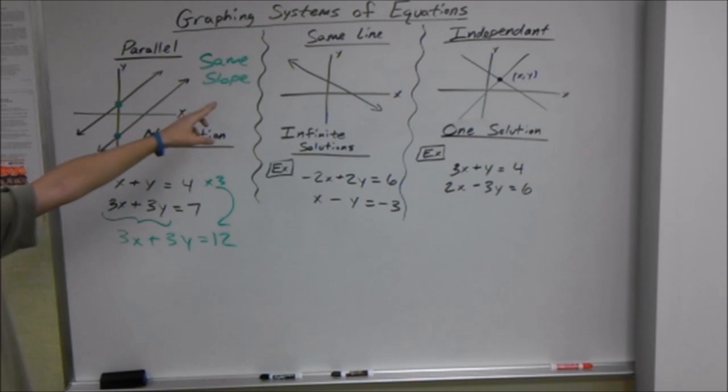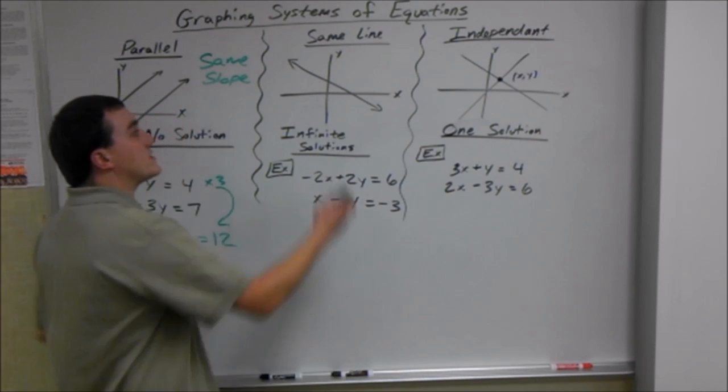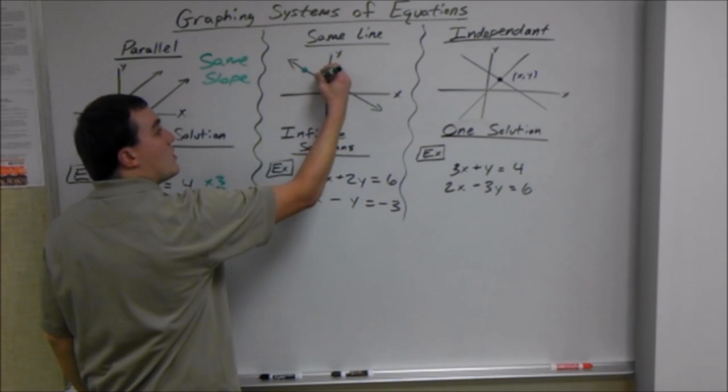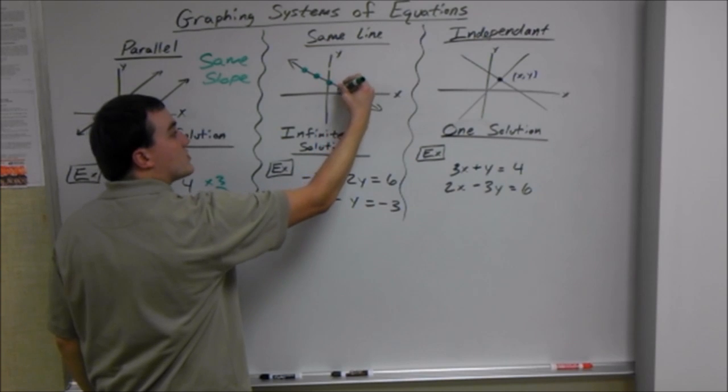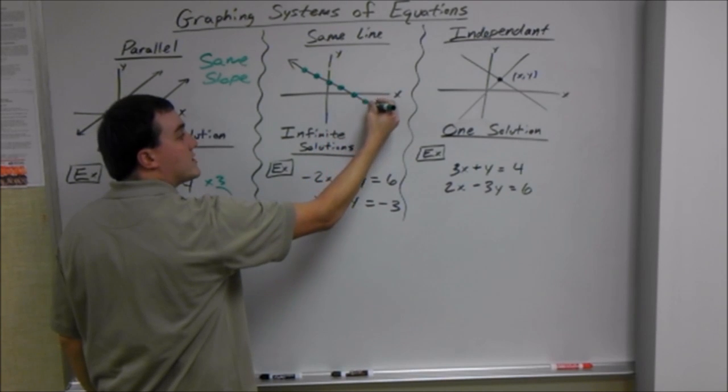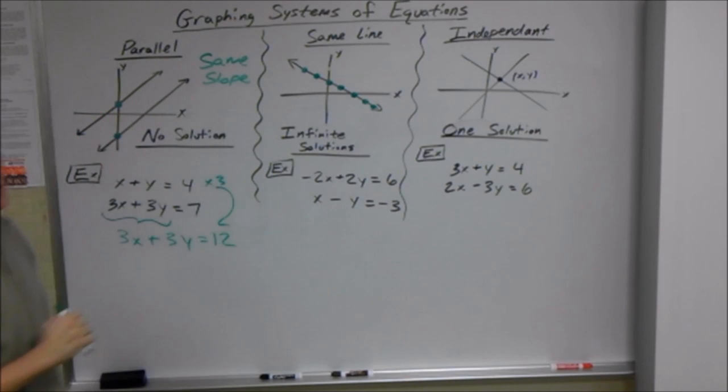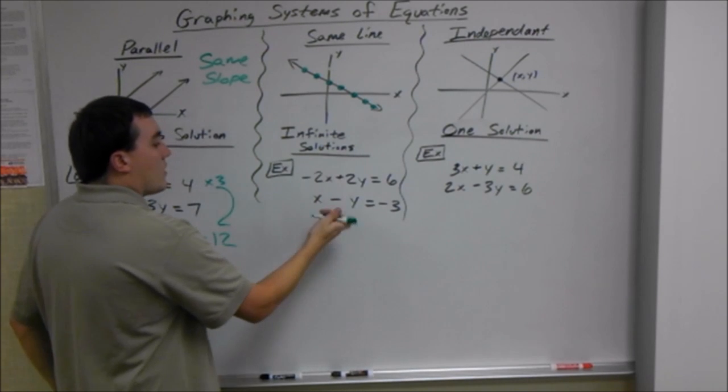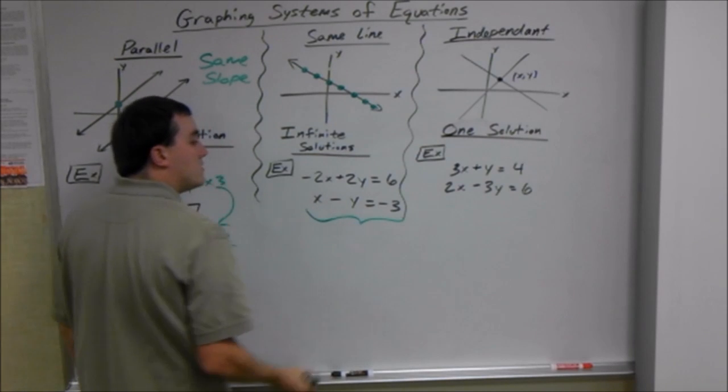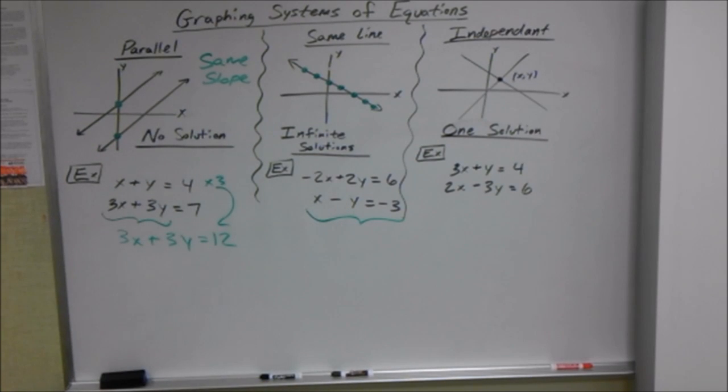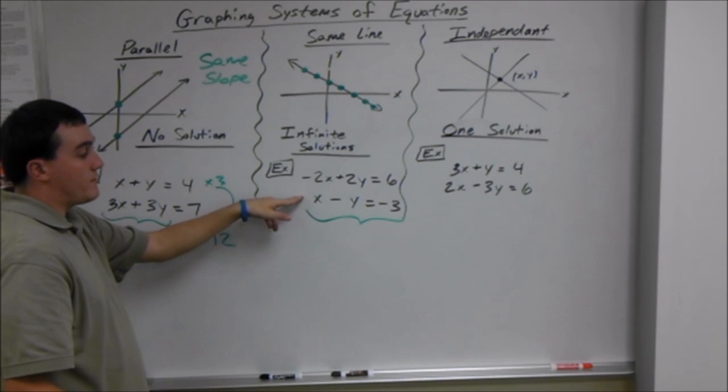If you have the same line, that means it hits at every single point. So all these points are solutions because we're looking at where the graphs hit. That means there are infinite solutions because it hits at every single point. So our lines here, in this case, aren't going to differ at all if we multiply by a certain factor.